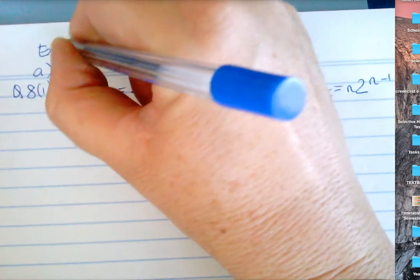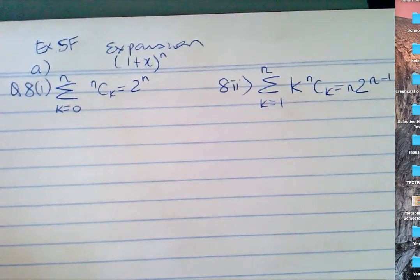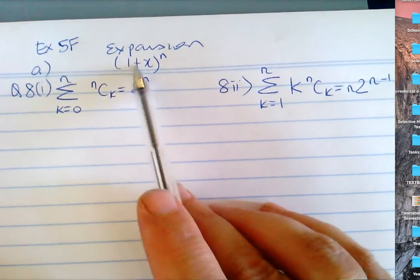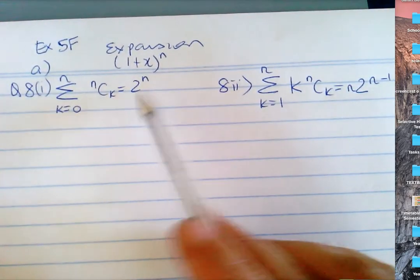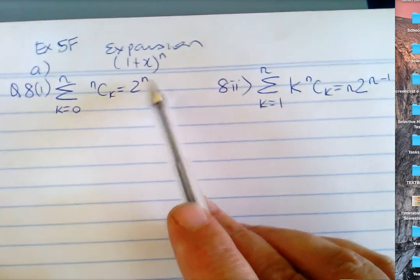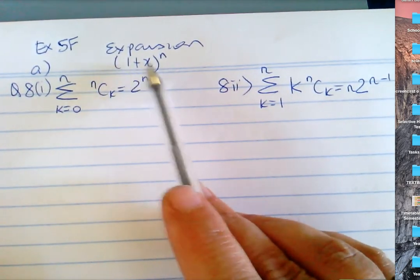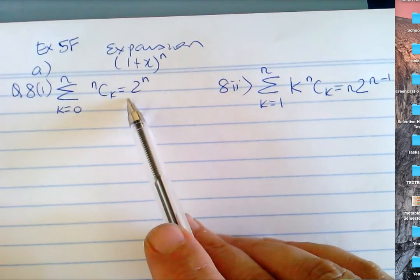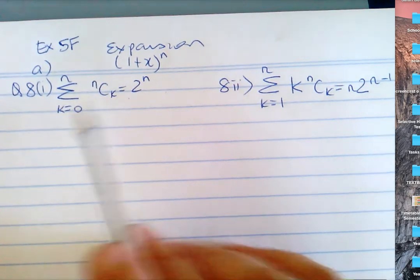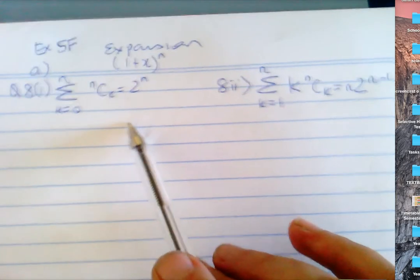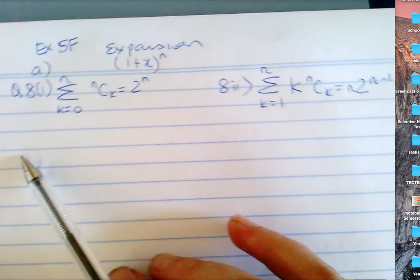Just one quick word for question 8. It says, by looking at the expansion of 1 plus x to the n, show this result. Notice that the highest power is n, and so is this. There is no differentiation or integration involved — it just looks like a substitution of x equals 1 was done here. You should expand your left hand side and then do your substitution.